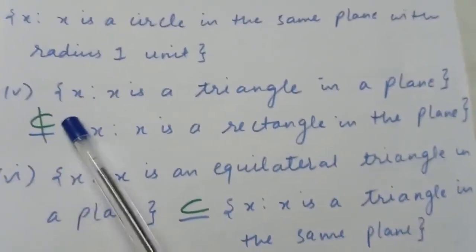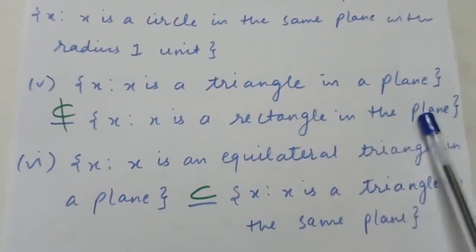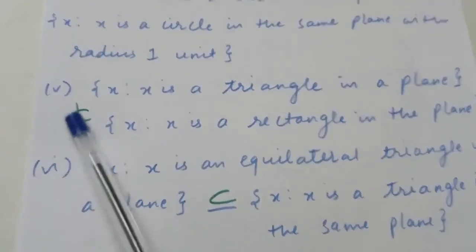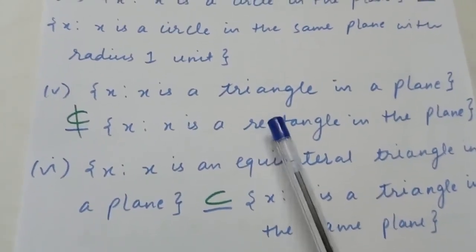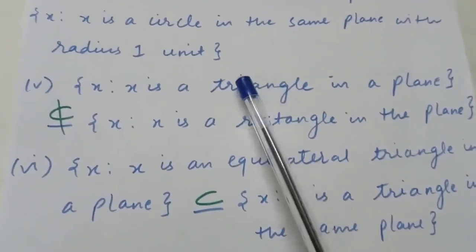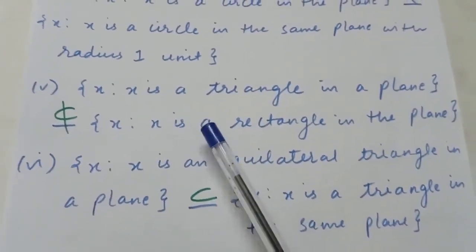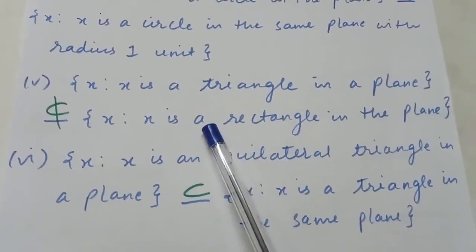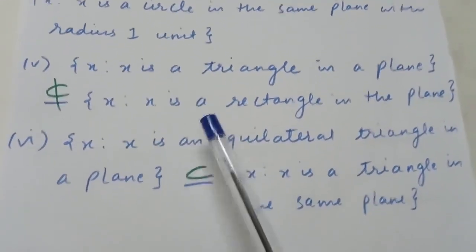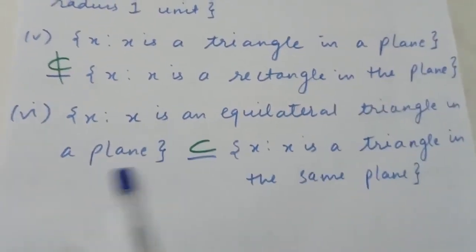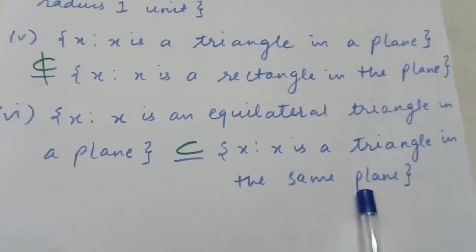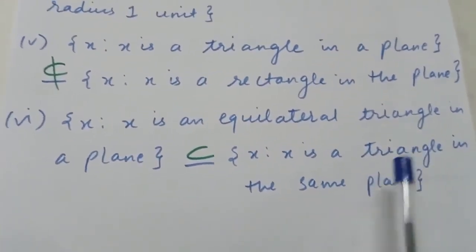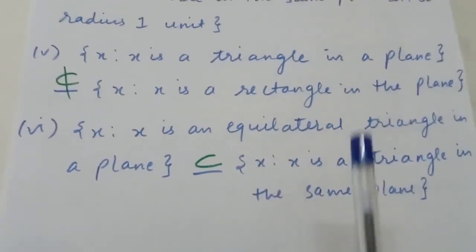Third: {x : x is a triangle in a plane} and {x : x is a rectangle in the plane} — a triangle is not a rectangle, so this set is not a subset of that set. Fourth: {x : x is an equilateral triangle in a plane} and {x : x is a triangle in a plane} — the second set contains all types of triangles, so the set of equilateral triangles is a subset of the set of all triangles.